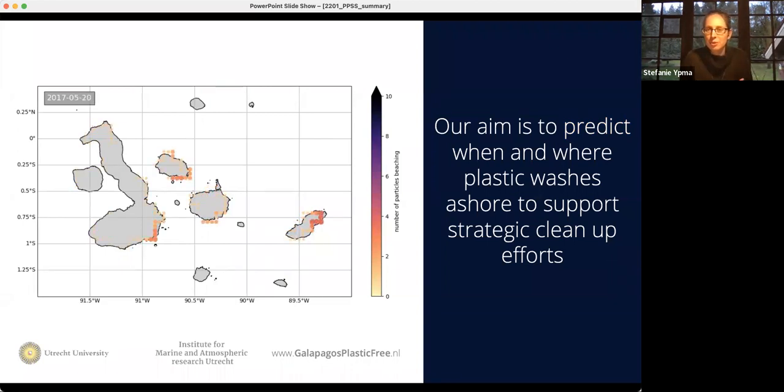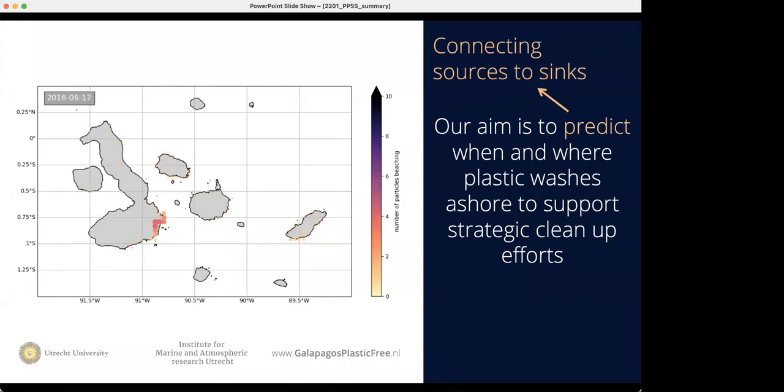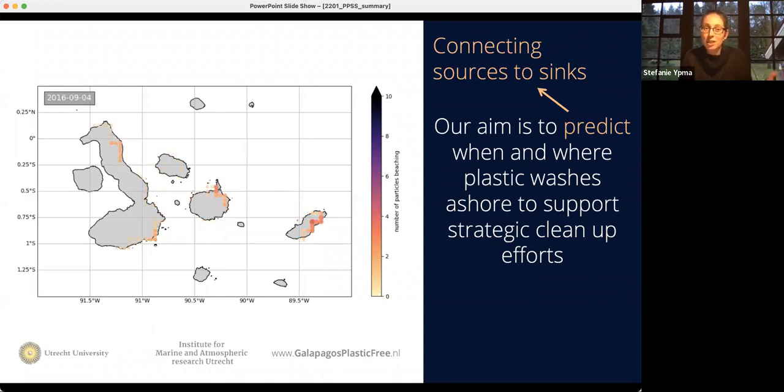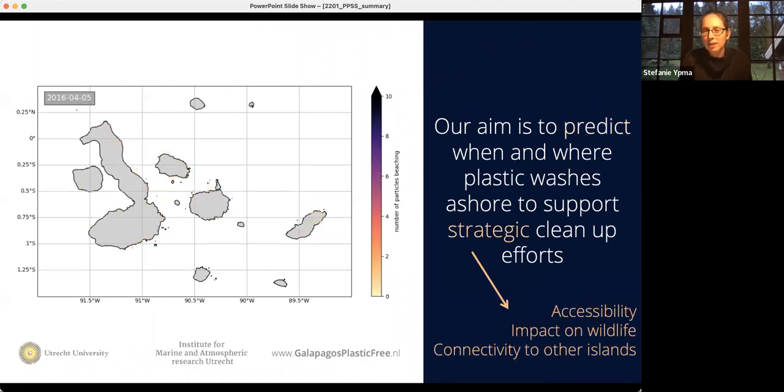We really want to predict, so that means we need to connect our sources, from the mainland or from fisheries, to the sinks, the shorelines of the Galapagos, looking at the pathways through the ocean. But an important point is that we want to make it as strategic as possible, these cleanup efforts. We're not only interested in which locations receive most plastic from remote sources, but also want to optimize for how accessible a specific location is or what the impact is on local wildlife or maybe tourism. And also the connection of a specific location to other islands, because the plastic does not always remain on shore, it can go back into the ocean and impact other islands.